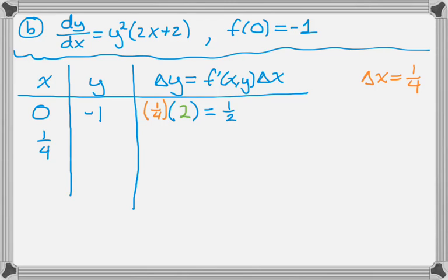So x becomes 1/4 because I add Δx. And my new y value is my old y plus my Δy. So I'm adding those two quantities to get -1/2. And I recalculate. So don't forget Δx.